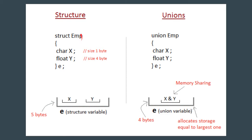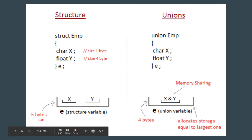In case of a structure, take this sample structure EMP, inside which there are two variables: char x and float y. Both of them occupy their own distinct memory. The size of x is one byte because it's a char, and the size of y is four bytes because it's a float. So the total size becomes five bytes for this particular structure.